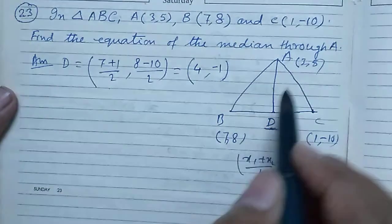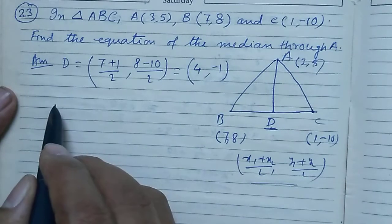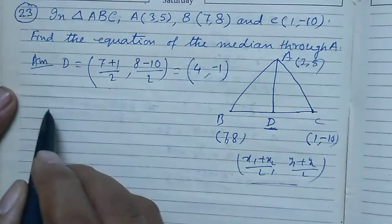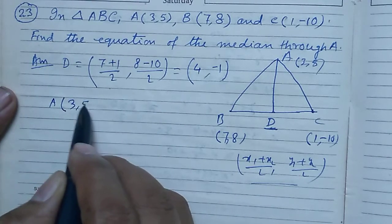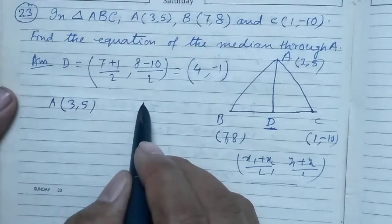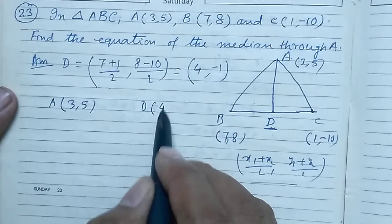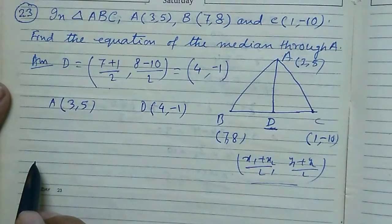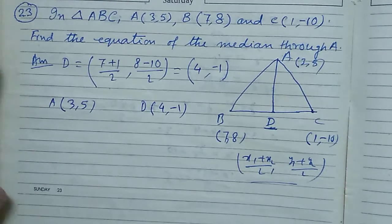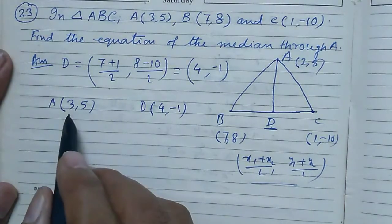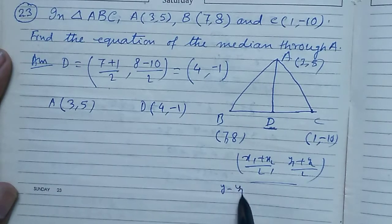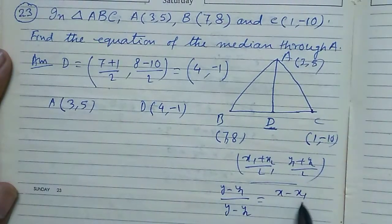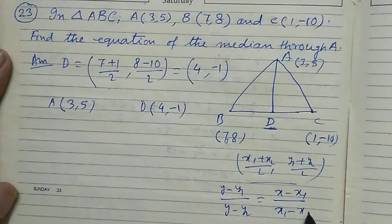Now we have to find the equation of AD. Here, the coordinates of A is given as (3, 5), and coordinates of D we just determined as (4, -1). Now we know the equation by the point-point formula. Here, that is Y minus Y1 by Y1 minus Y2 equals X minus X1 by X1 minus X2.